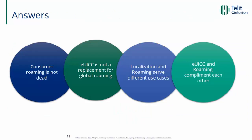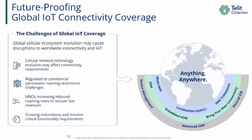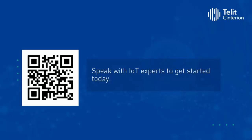To answer the questions we asked at the beginning of the webinar: consumer roaming is not dead. EUICC is not a replacement for global roaming. Localization and roaming serve different use cases. EUICC and roaming complement each other. In response to market changes and to ensure future-proof global IoT coverage, Telit Centurion is offering a combination of roaming and local profiles with maximum flexibility — single and multi-IMSI profiles, including bring-your-own connectivity, on a variety of SIM form factors, supported by an advanced connectivity management platform, device management, and multi-language 24/7 customer support. If you have any questions, please contact us using the QR code. Thank you, back to you Amanda.